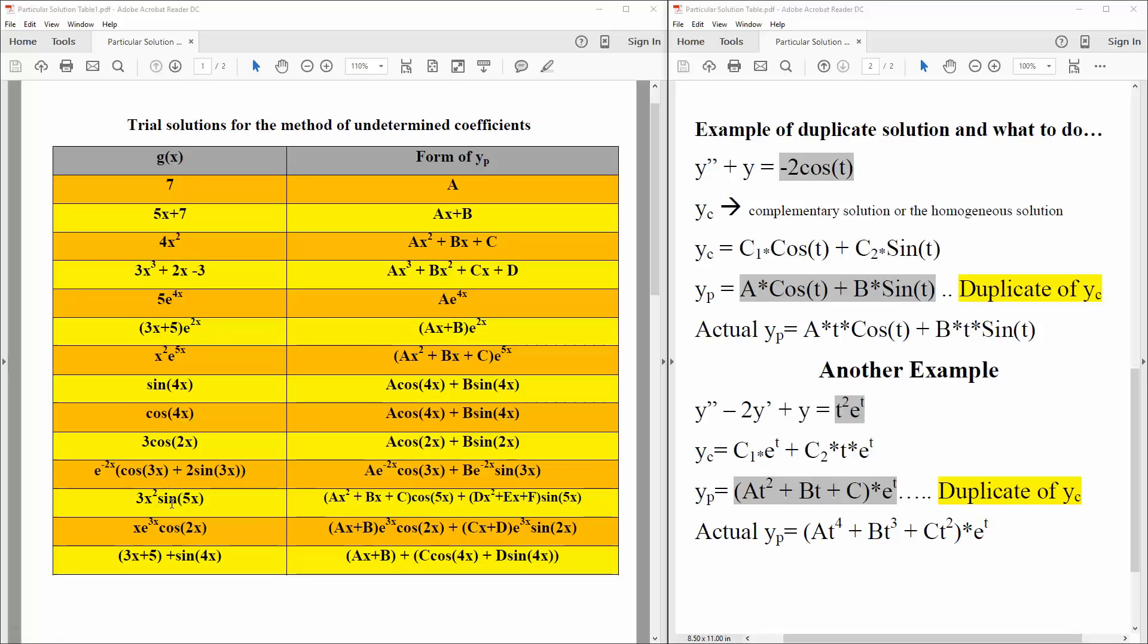Next is 3x squared, sine 5x, so we go focus on the inside, x squared, so ax squared plus bx plus c, then we treat like sine 4x. Where we say cosine 5x, sine 5x, but here the next one would be dx squared plus ex plus 4, plus f, another round.